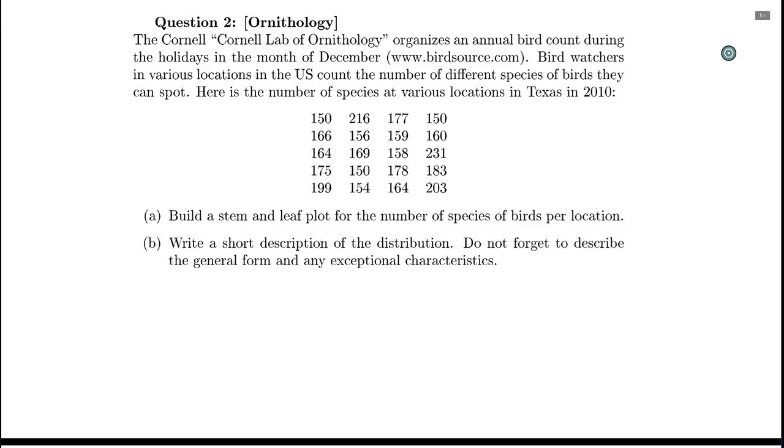We are asked to build a stem and leaf plot for a numerical variable which is counting the number of species at different locations in Texas. For example, 150 represents 150 different species that have been located at that location in 2010.